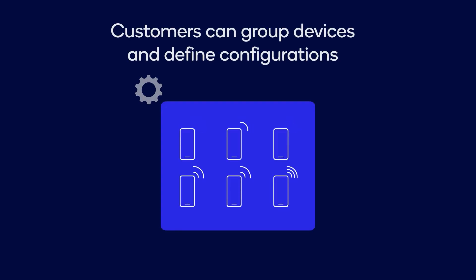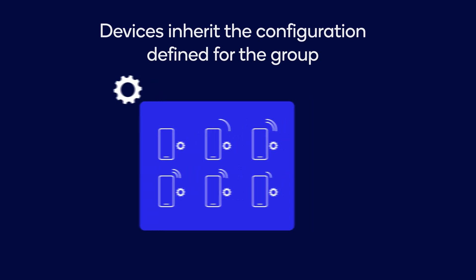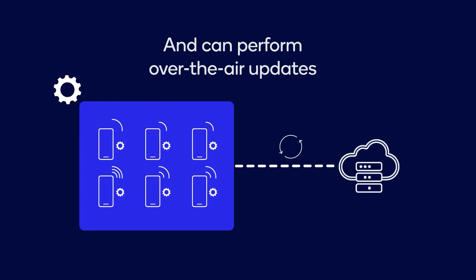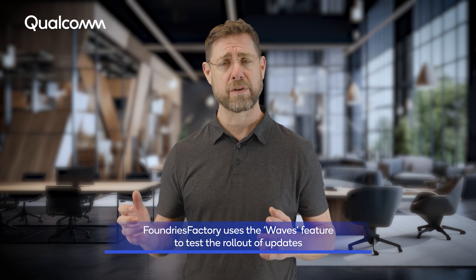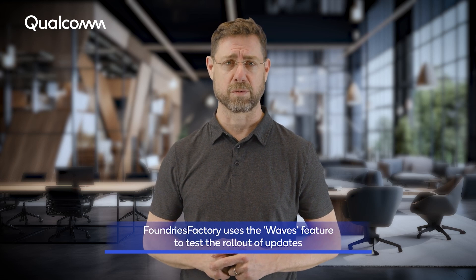At a higher level, customers can group devices together and define configurations. As devices join these groups, they inherit these configurations and can perform an over-the-air update to the target defined in the group. Rolling out OTA updates to a fleet of devices can be a complex task. The Foundries Factory uses a feature called Waves to test the rollout of an update to a small sample of a device group, allowing you to monitor for any issues before pushing the update to the rest of the device group or the entire fleet.